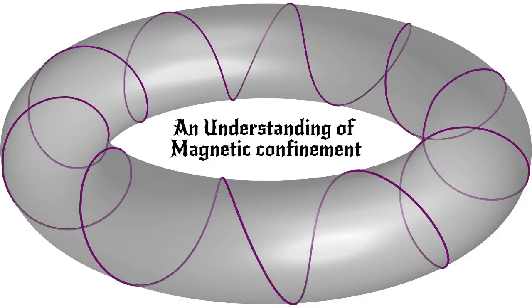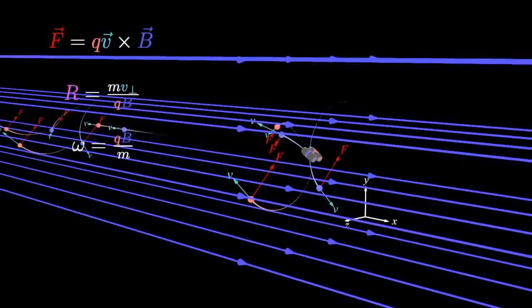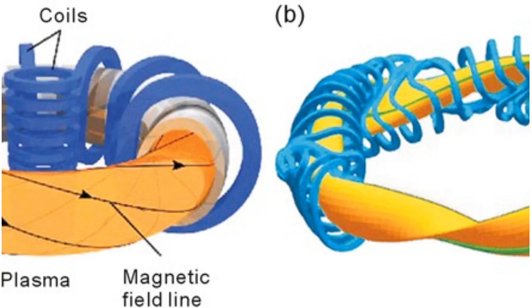Magnetic confinement is the method by which charges can be confined within a magnetic field. Charges experience a force given by F equals q v cross B, where q is the charge of the particle, v is the velocity of the charge, and B is the magnetic field vector in the space where the charge moves.